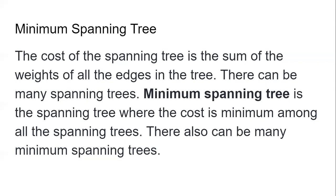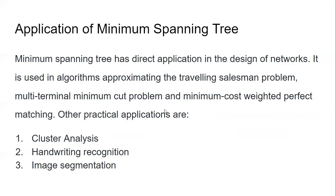There are cases where you may have more than one minimum spanning tree. The minimum spanning tree algorithm is very applicable. There are many cases where it has to be determined — such as in the design of a network, where you may want to ensure that you're using the shortest possible routes. We have navigation systems like Google Maps that most persons use, and applications like those depend on the minimum spanning tree concept. Other applications include the traveling salesman problem, cluster analysis, handwriting recognition, and image segmentation.